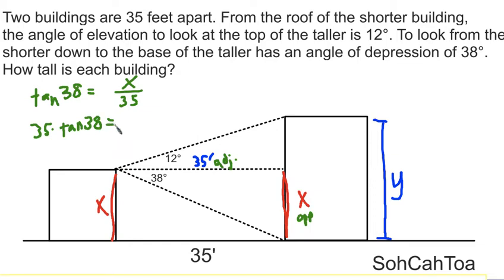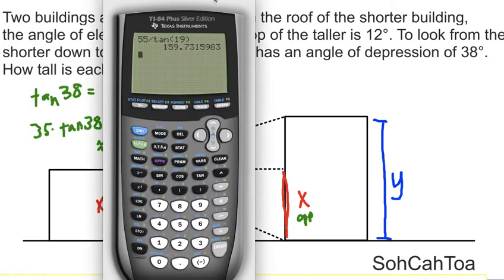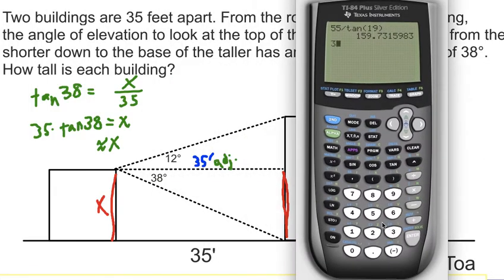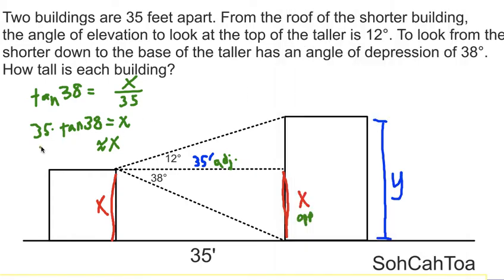And that will give me, without too much work, the value of x, which is approximately, according to our calculator, 35 tangent of 38, 27.3 feet. A little under three stories, give or take, just for some reference. So our shorter building is 27 feet, because that's how long this distance right here is, which is equivalent to this distance right here.